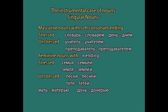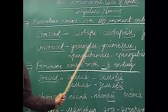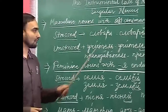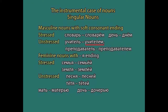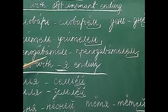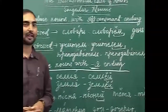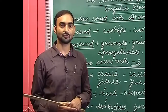What happens when the ending is unstressed? For example, учитель — as you can see, the middle syllable is stressed and the ending is unstressed. For masculine nouns with soft consonant ending where the ending is unstressed, we use -ем: учитель becomes учителем. Similarly, преподаватель becomes преподавателем — the ending is unstressed, the penultimate vowel is stressed, so we use -ем. So: if ending is stressed → -ём; if ending is unstressed → -ем.